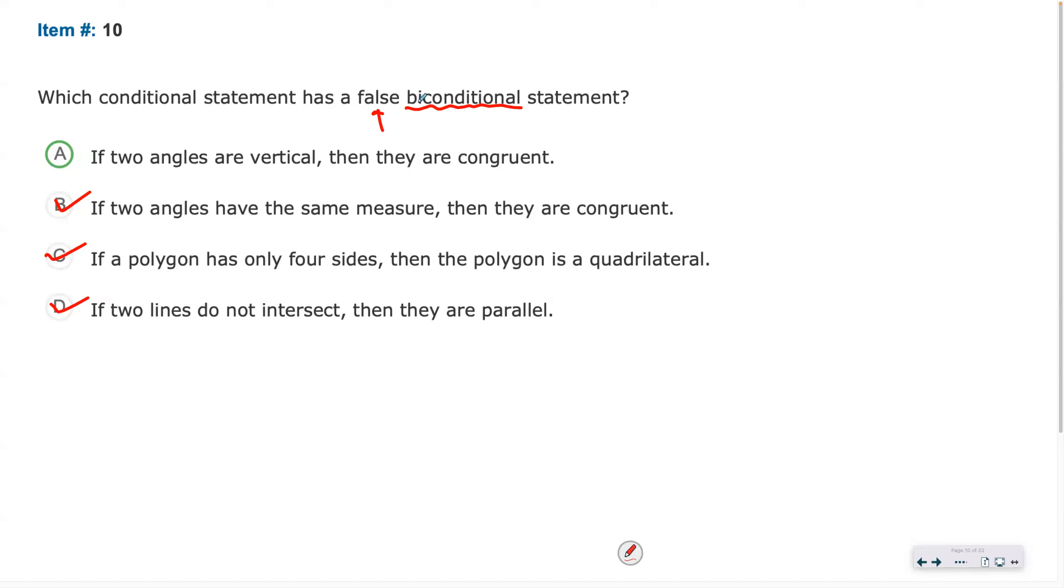But biconditional, we're focusing on the opposite statement. If two angles are congruent, they have to be vertical? No, no. Someone give me a counterexample to this. What are two that are congruent that are not vertical?